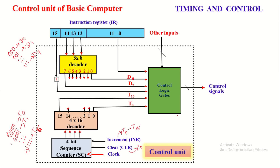Here in this slide, the block diagram of the Hardwired Control Unit is illustrated. The dotted rectangle box encloses the important components of the control unit. It covers two decoders — one is a 3-by-8 decoder and another one is a 4-by-16 decoder — one JK flip-flop, control logic gates, and a 4-bit sequence counter.